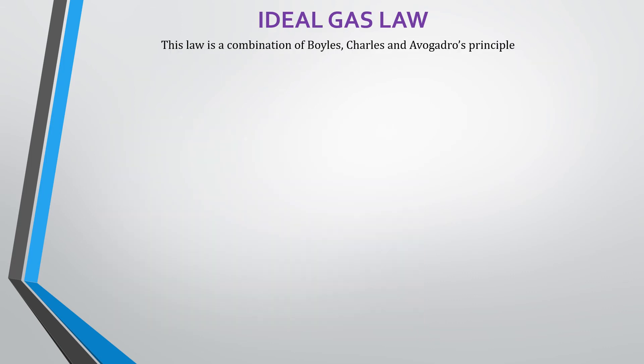Next up, we are going to see how we combine Charles', Boyle's, and Avogadro's principle in one law called the ideal gas law. In the ideal gas law the formula is PV = nRT, where P is pressure, V is volume in liters, n is moles, R is a constant whose value is 8.314, and T is the temperature measured in Kelvin.